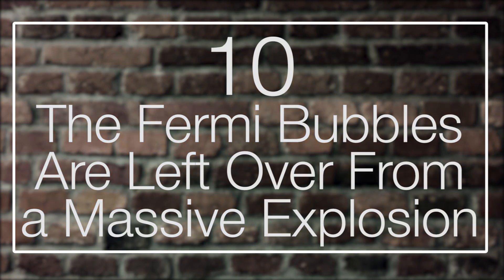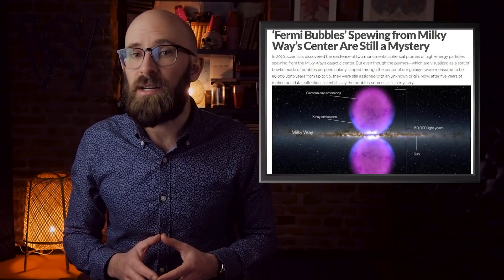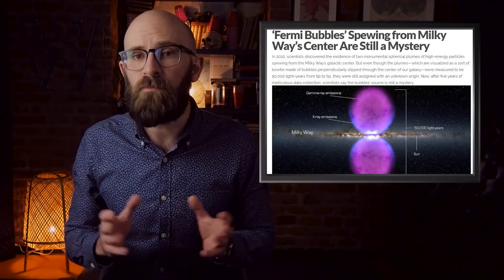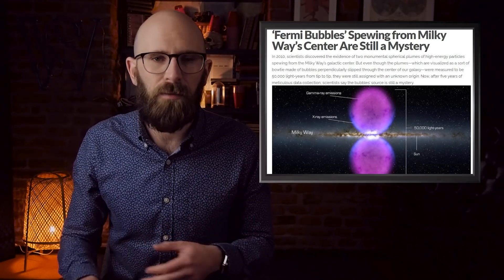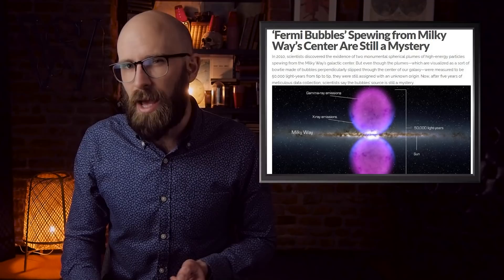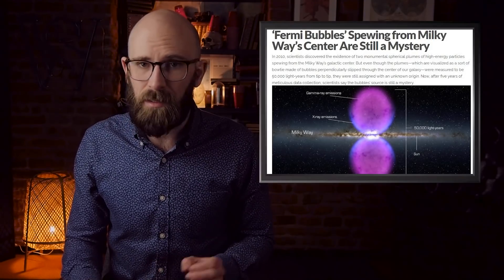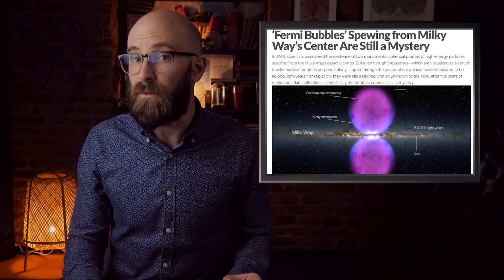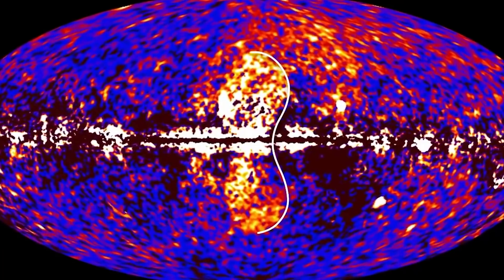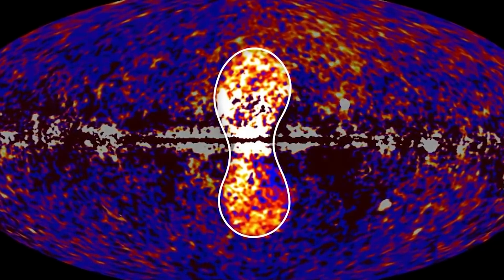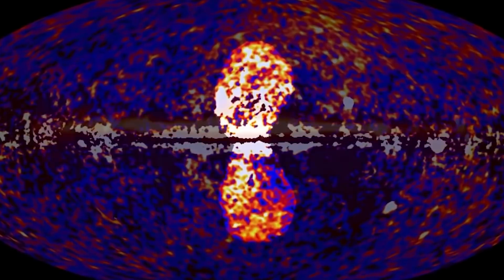Number 10: The Fermi Bubbles Are Left Over From A Massive Explosion. Above and below our galaxy, stretching 25,000 light years each, are two bubbles of gamma-ray energy. These Fermi bubbles were first discovered in 2010 by a group of scientists at the Harvard Smithsonian Center for Astrophysics.